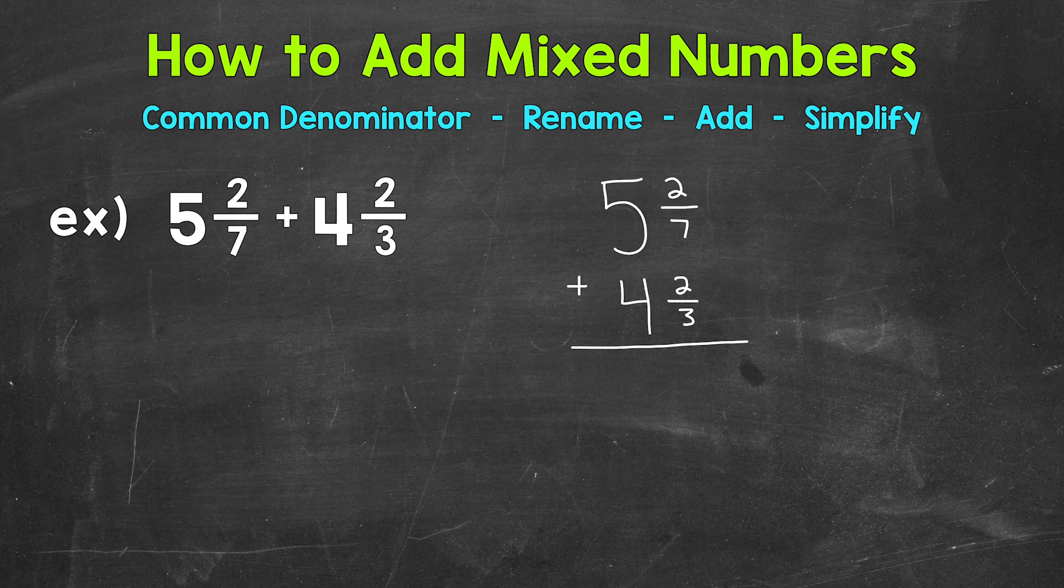We need a common denominator in order to add the fractional part of these mixed numbers. So in order to find a common denominator, we need to find a least common multiple, and that's going to be our least common denominator. Now you may be able to figure out what the least common multiple between 7 and 3 is without writing out the multiples, but as a review, I'm going to come to the side here and we'll write out our multiples and I'll show you how to find the least common multiple.